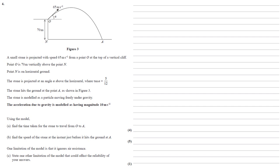The stone is projected at an angle alpha above the horizontal where tan alpha equals 5 twelfths. The stone hits the ground at the point A, as shown in Figure 3.